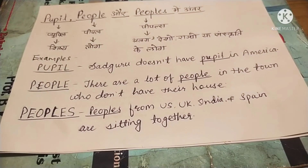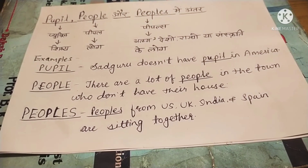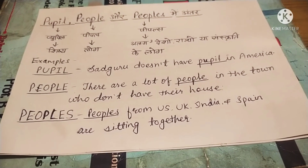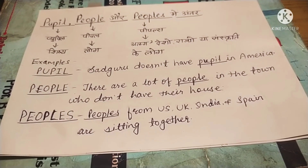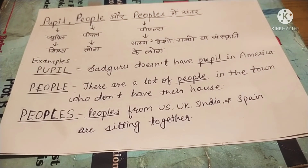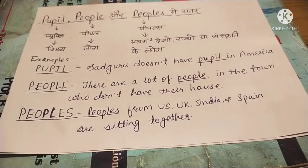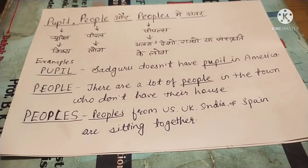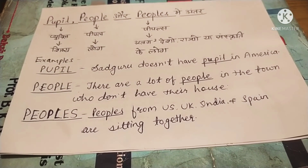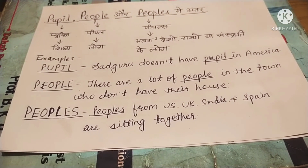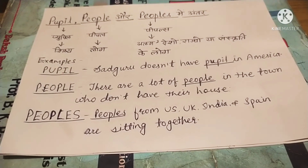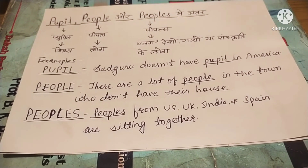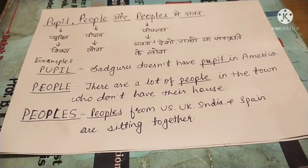For example: 'Peoples from US, UK, India and Spain are sitting together.' Matlab jo log UK, US, India aur Spain se hain, wo sab log saath mein baithe hue hain. Toh is sentence mein humne dekha ki yeh alag-alag countries ke logon ko bataya ja raha hai — is karan hum log peoples use karte hain.